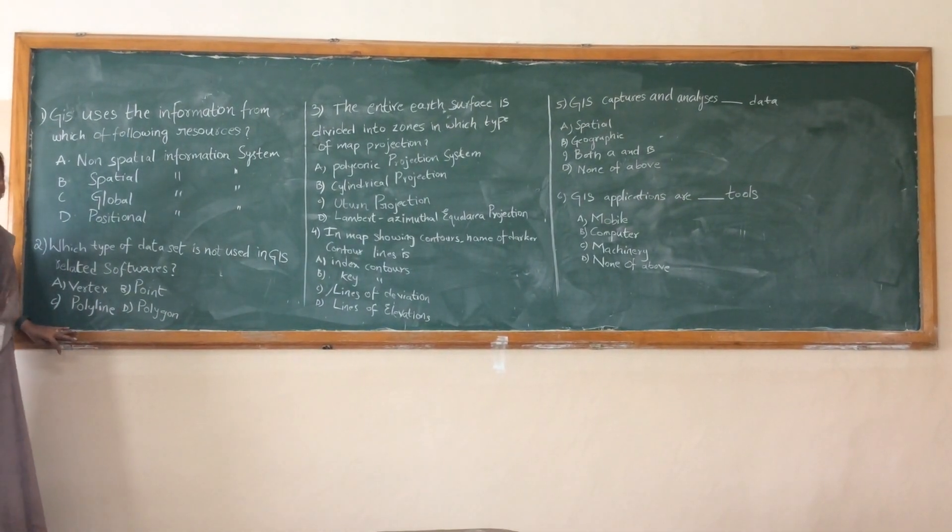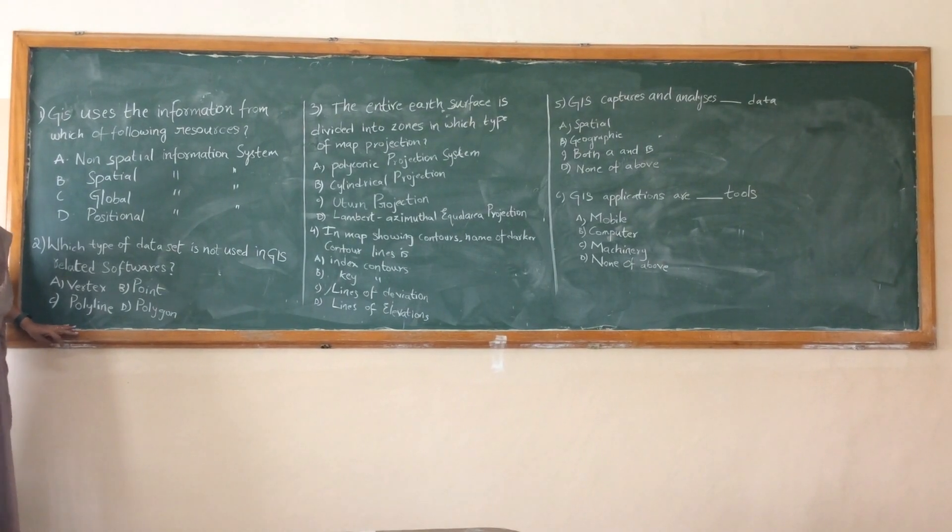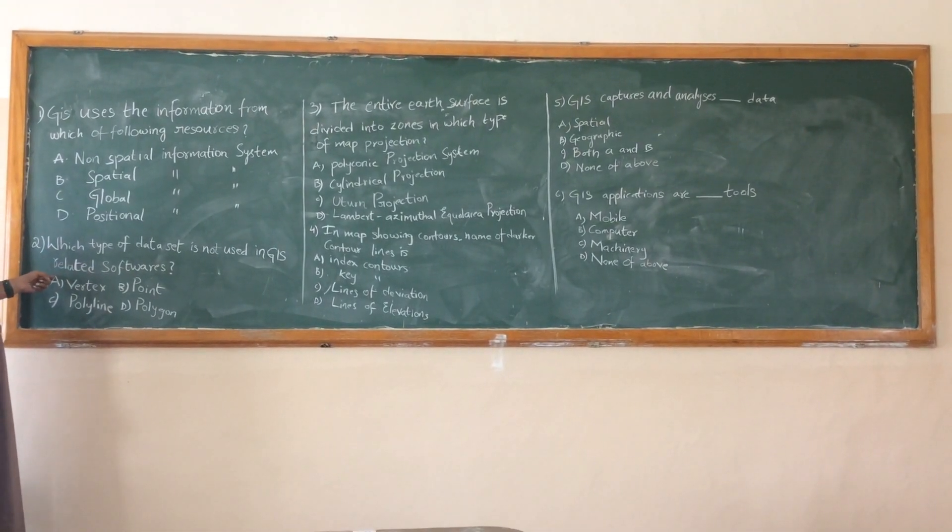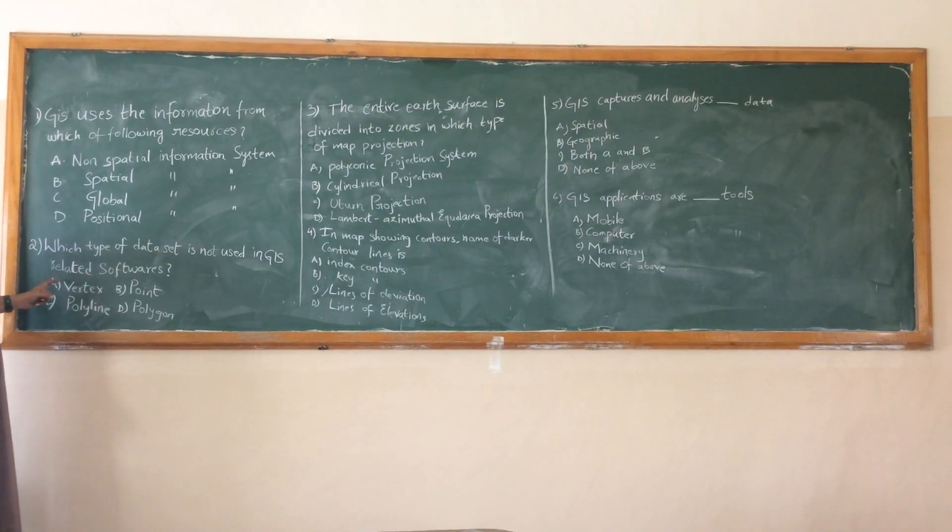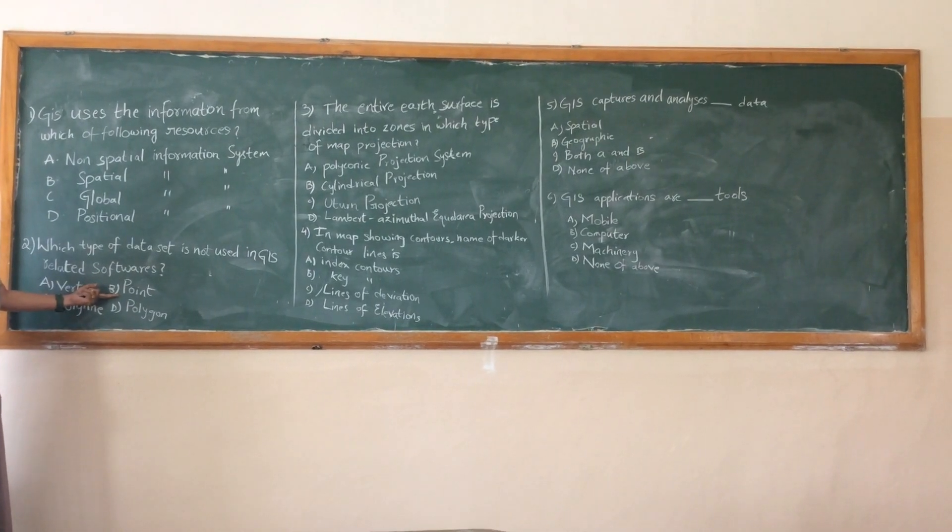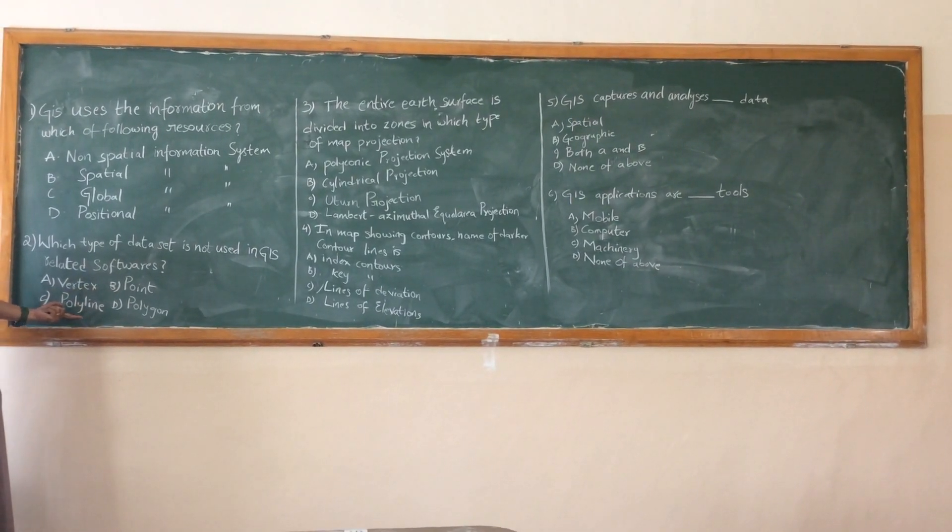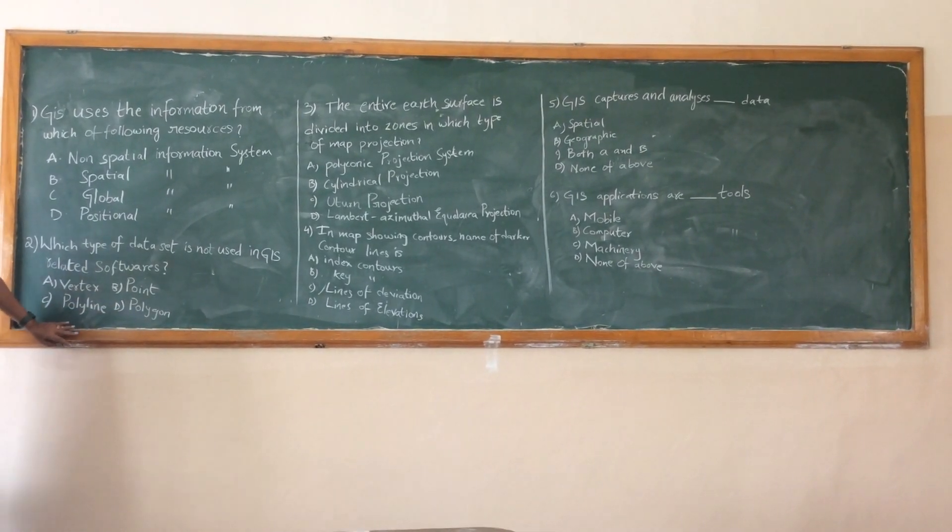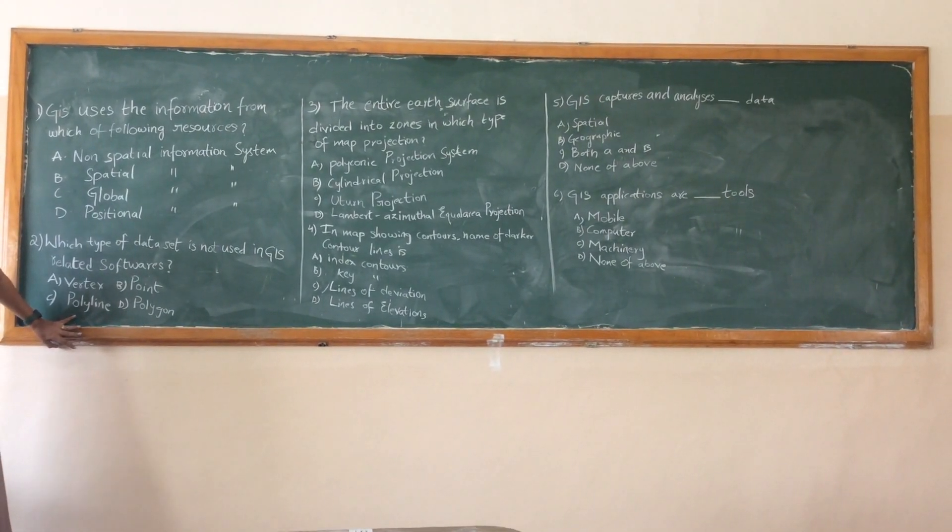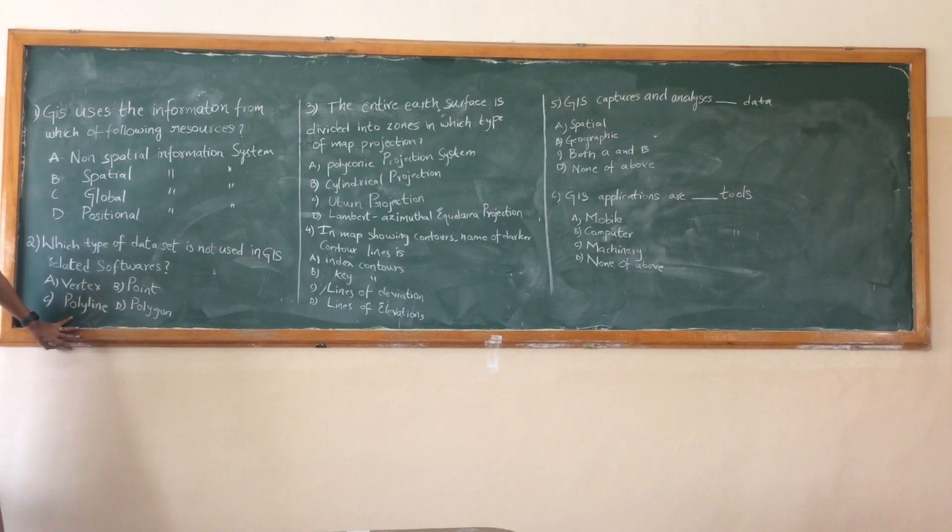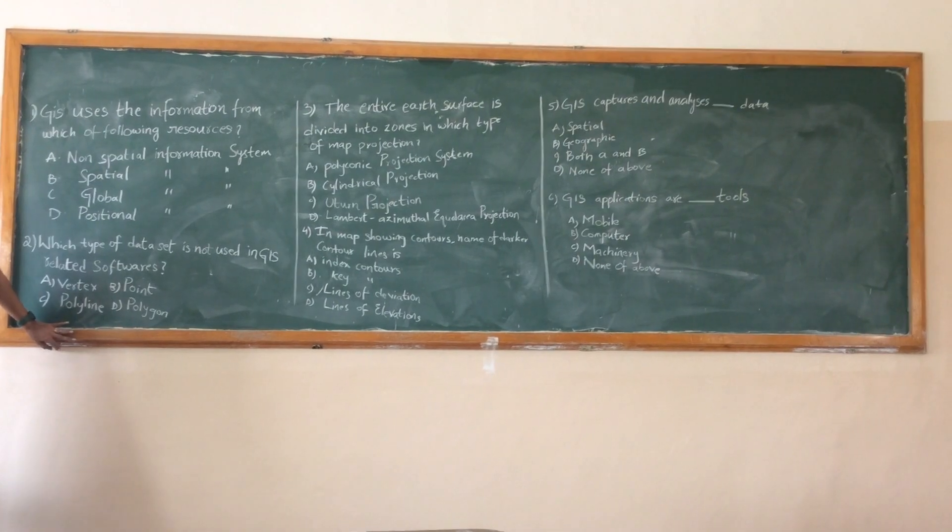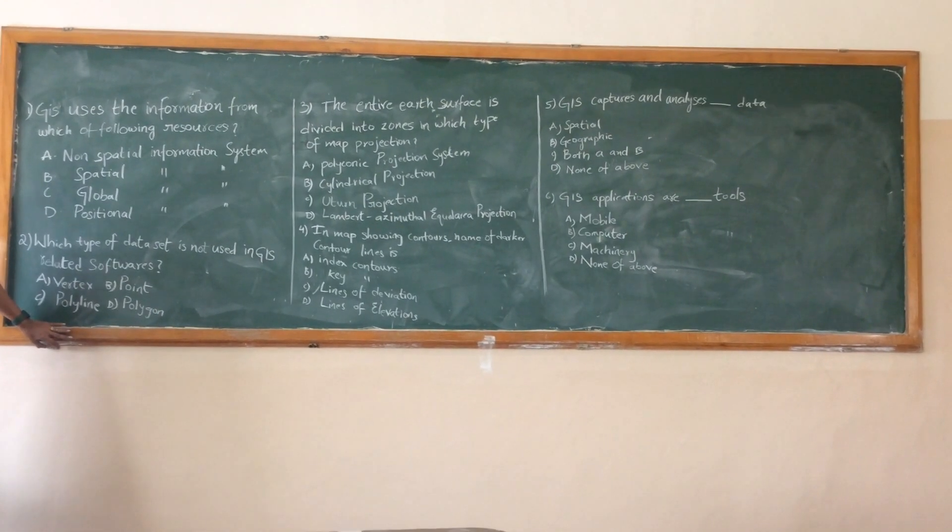Which type of a data set is not used in GIS? We have various types of the data sets in various subjects also. Which type of data set is not used in GIS related softwares? One is vertex. Second one is a point. Third one is a polydite. Fourth one is a polygon. Which one is not used? Polydite? Vertex is not used for the softwares. Why vertex is not used enough?